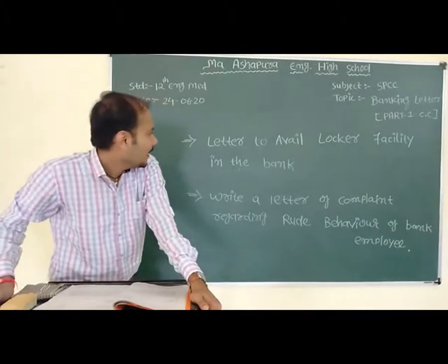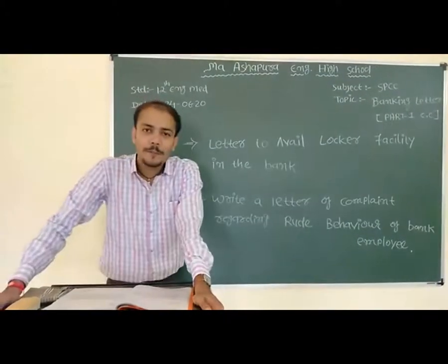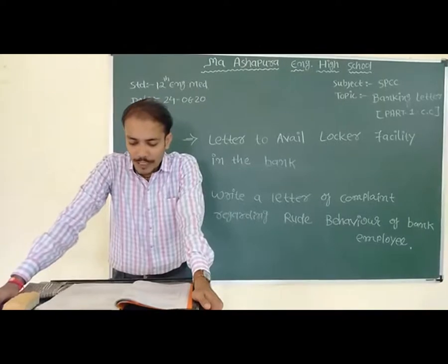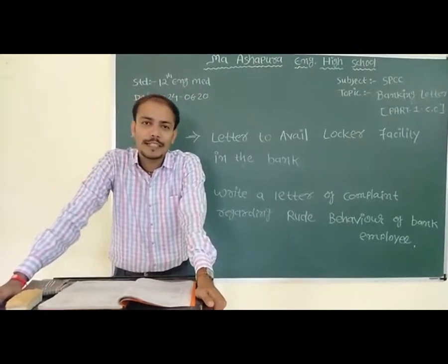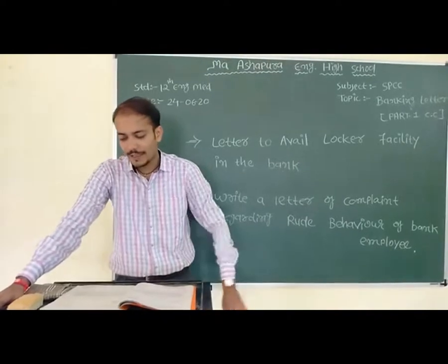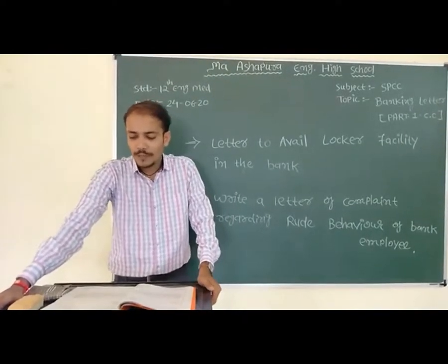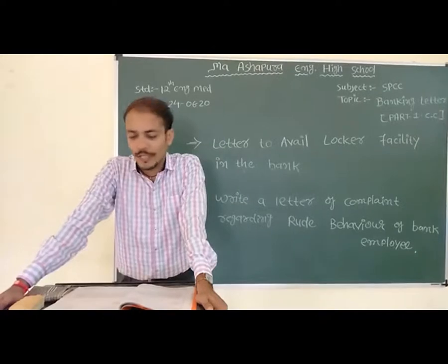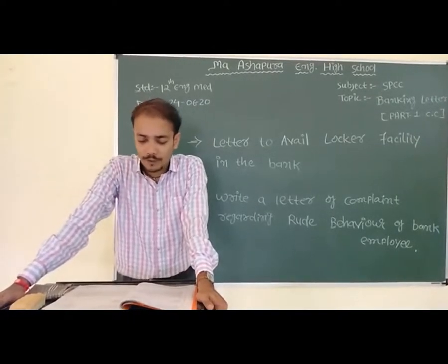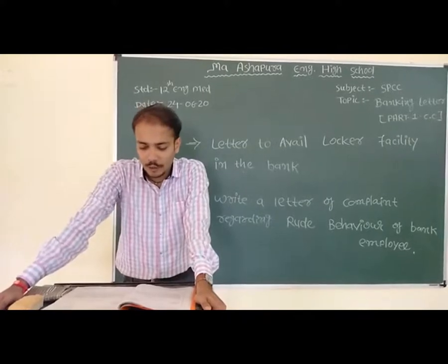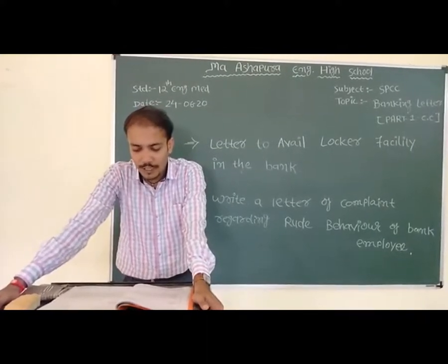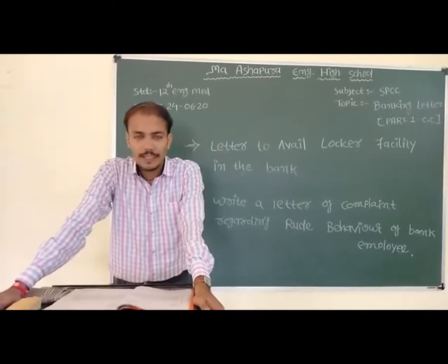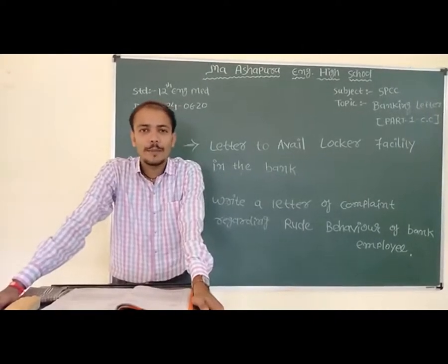The first letter is to avail locker facilities in the bank. Pavitra Suthar is the person writing this letter. Pavitra Suthar has an account in Union Bank and needs locker facilities. To request this facility, we write a letter to the bank. On the right side, we have the name Pavitra Suthar, address, contact number, and on the left side, 'To the Manager, Union Bank, Manvi, Dahod.' The heading, address, and date format is as covered in standard 11, so I won't repeat that.